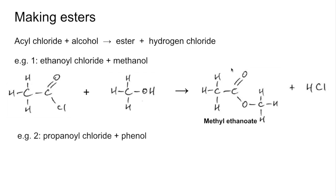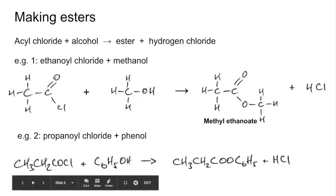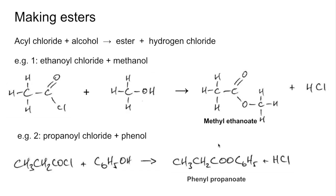An example of a phenyl ester now — remember this is not possible using a carboxylic acid. The starting point is propanoyl chloride in its structural formula and phenol, C₆H₅OH. We're going to lasso out the HCl and join the rest together. We've got a phenyl group and a three-carbon chain, so this phenyl ester is called phenyl propanoate.